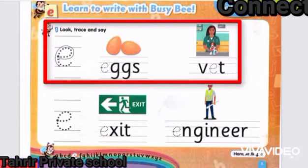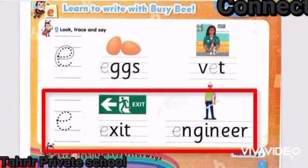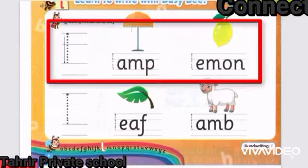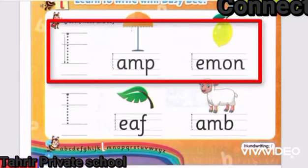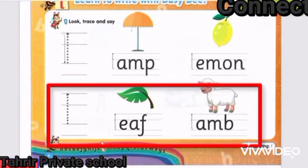I need all of you to use your pencil in this page to trace letter E for eggs, vet, exit, and engineer. Please use your pencil to trace letter E. Also, use your pencil to trace letter L for lamb, lemon, lemon, leaf, leaf, lamb.